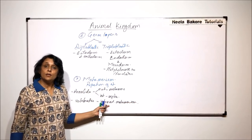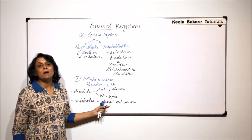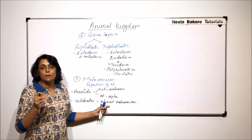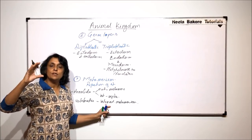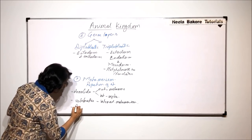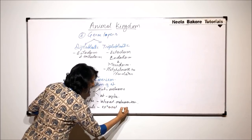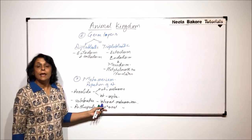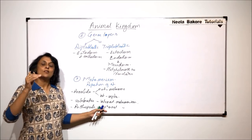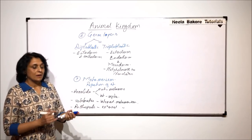In vertebrates, there is repetition of internal structures like vertebrae, ribs, and muscles. But we do not find this internal repetition reflected externally. In case of arthropods, there is external metamerism — externally we find prothorax, mesothorax, metathorax, and ten abdominal segments — but internally there is no such repetition of structures. So metamerism is another basis on which we can classify animals.